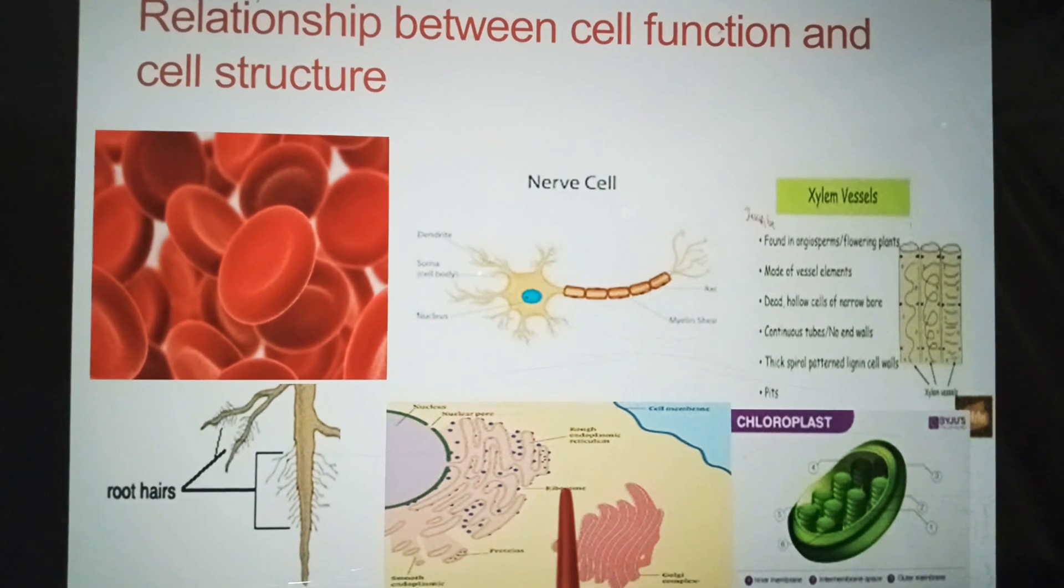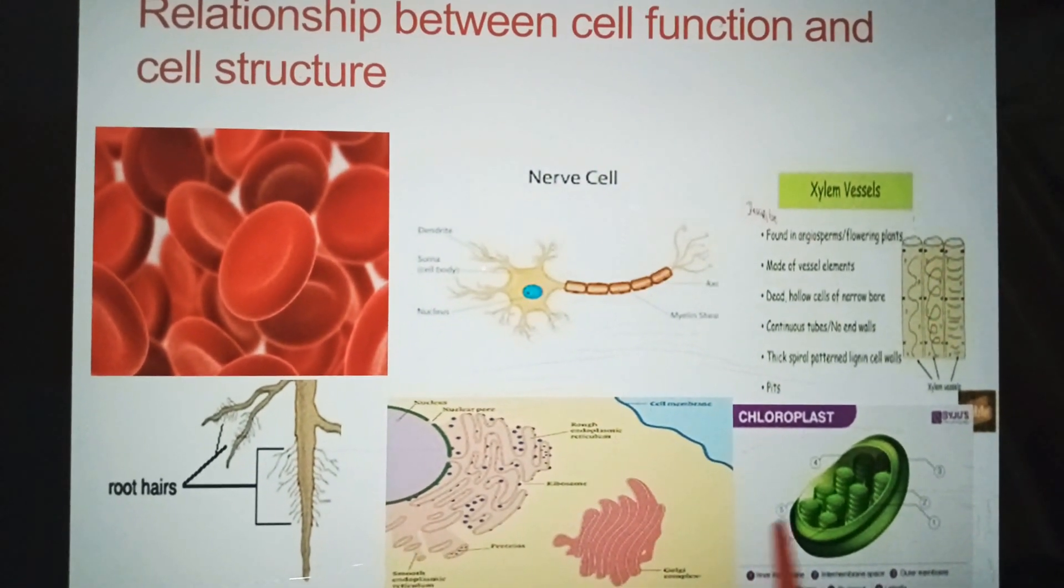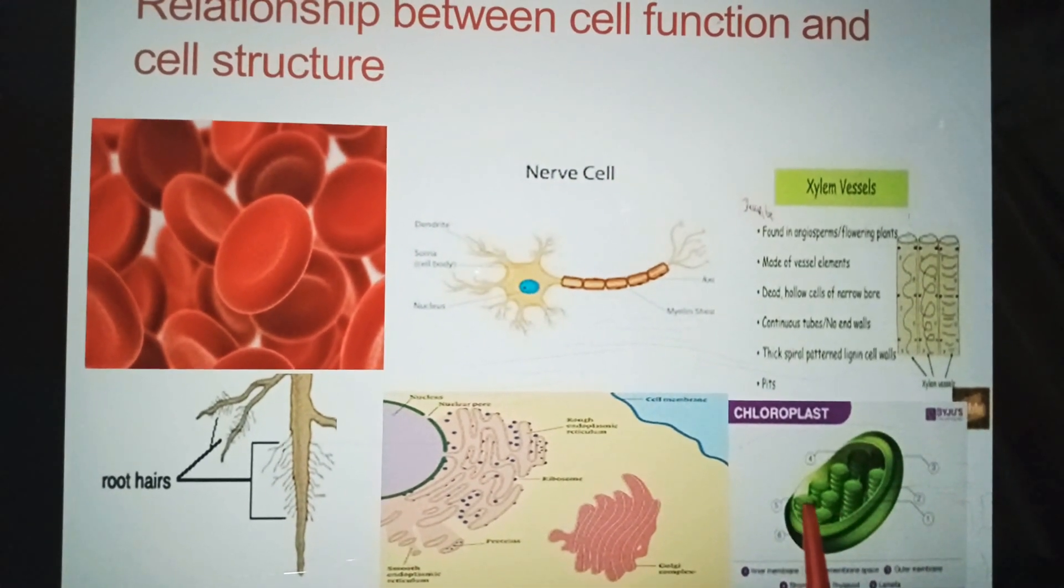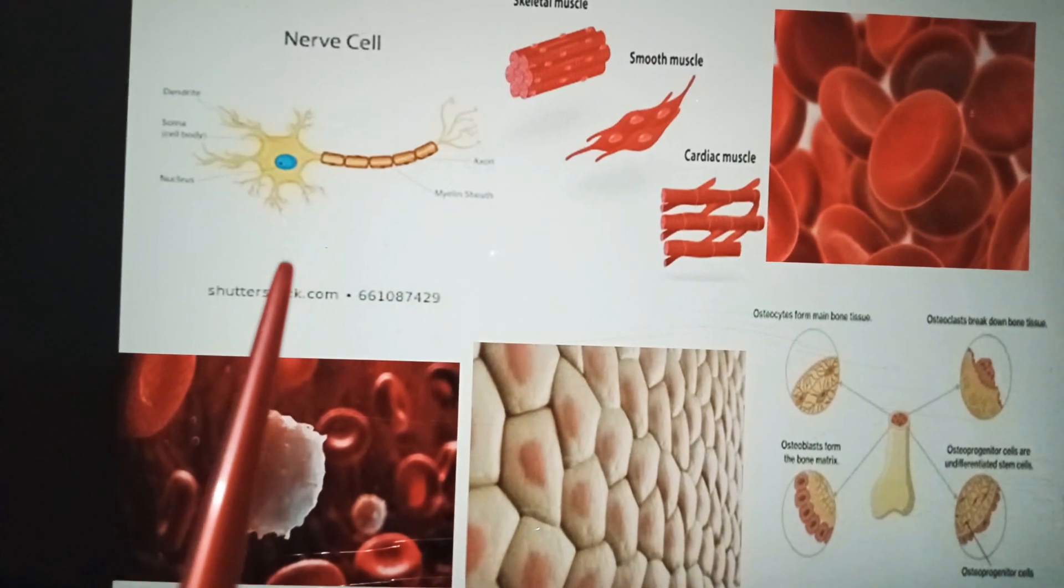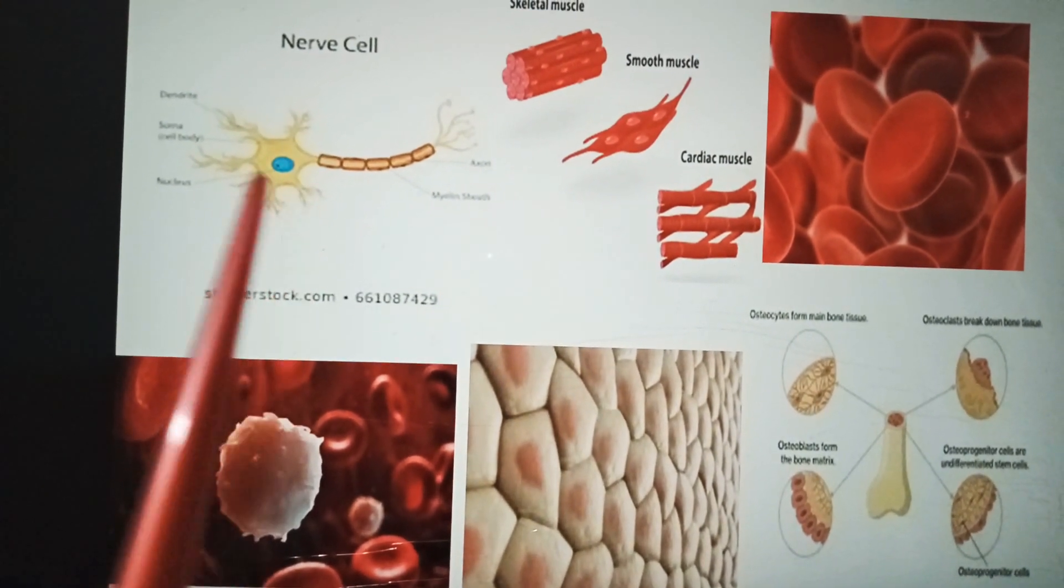Nerve cells conduct nerve impulse and thus contribute in coordination in body. Muscle cells undergo contraction and share their role in movements in body.